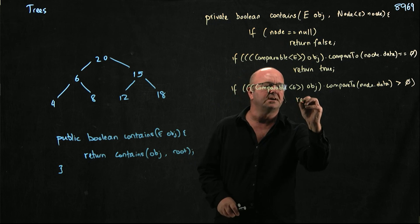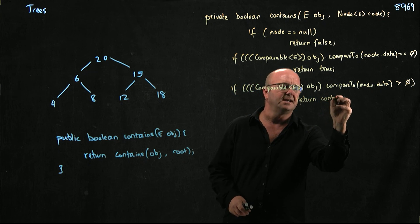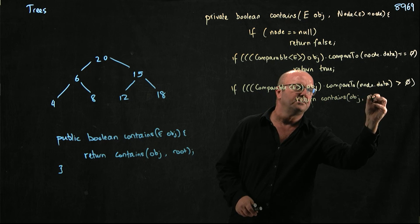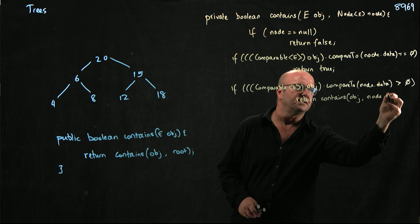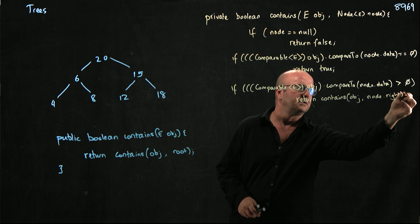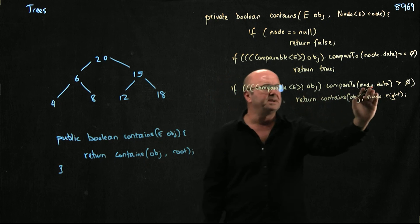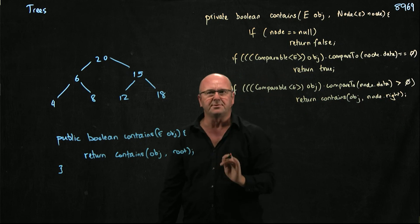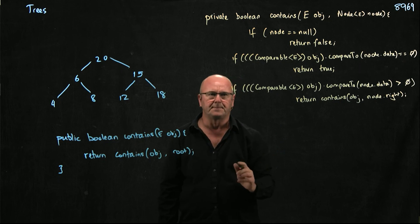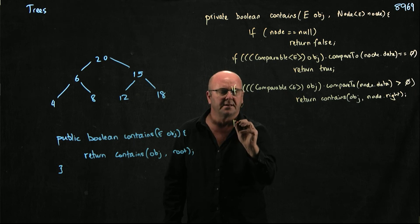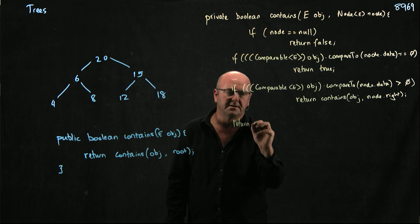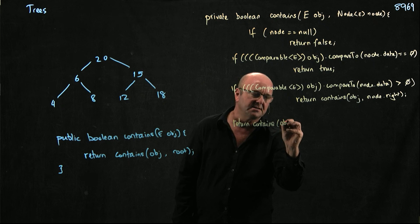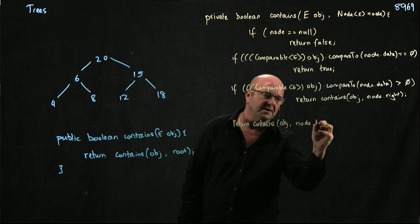Then we're going to return contains object node.right. If what we're looking for is bigger than where we are, we have to go to the right. Another moment where you have to pause and say, am I going the right way? Return contains object node.left.